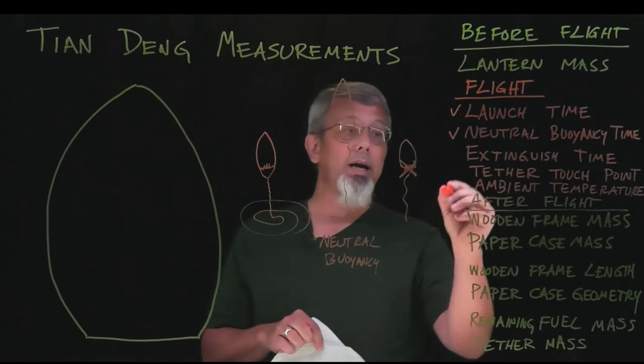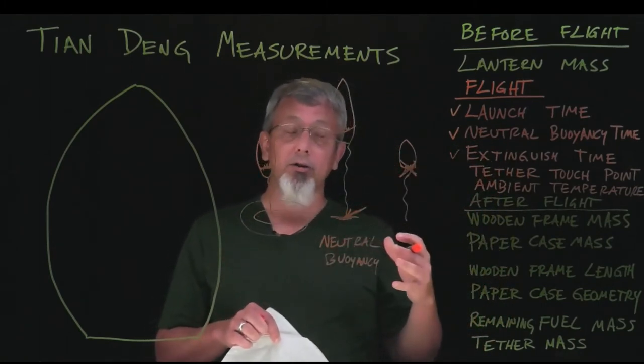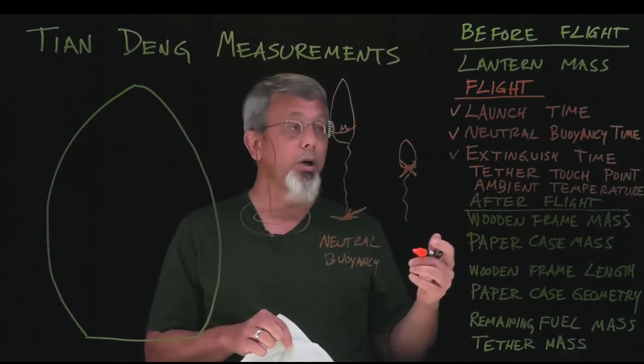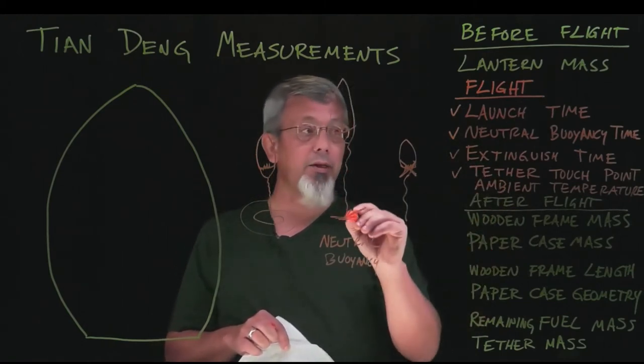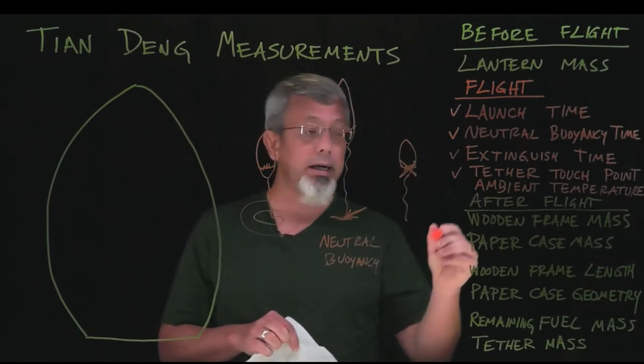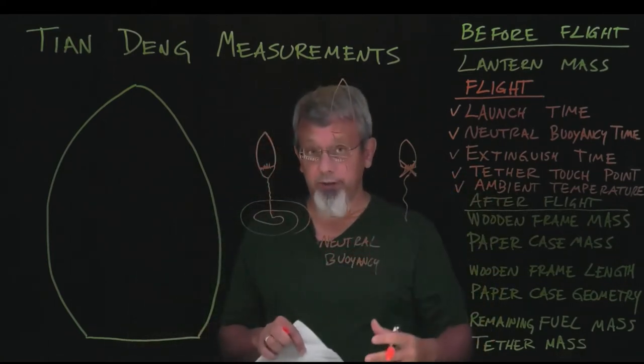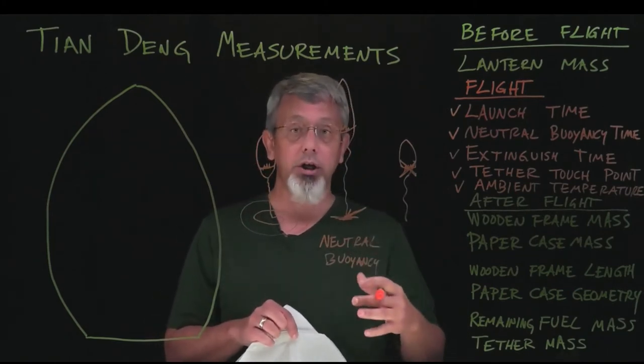And then again, when it comes back down, when you reach this point and you're spraying it out and putting out the flame, record that time as the extinguish time, the time when you're done. So when you're done, you're going to have those four pieces of information: a marking for the tether and these three times. And then the other thing you'll need to record is an ambient temperature. Do your best to get a value for the temperature outside on that day when you launch the lantern.